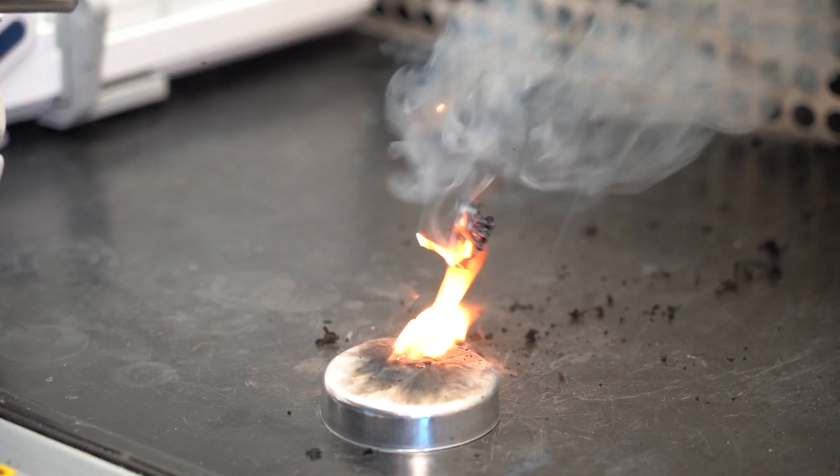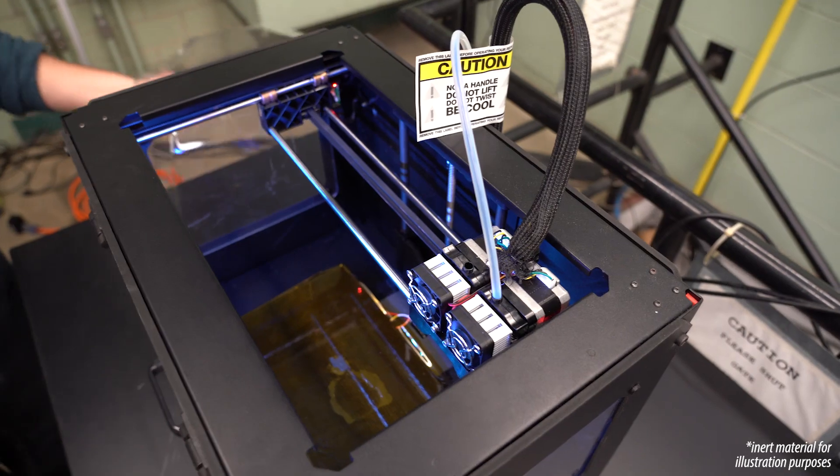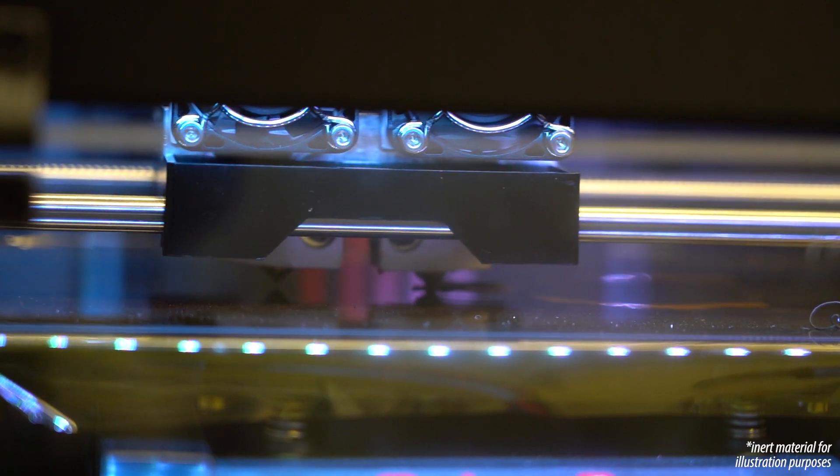There's many ways to do 3D printing. The specific one we're looking at is fused deposition modeling, where you're essentially taking a plastic, feeding it through an extruder which heats up the plastic, and then you can deposit it wherever you want to create really any complex geometry that you're looking for.